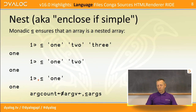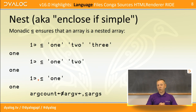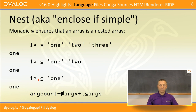Starting with an easy one: the monadic enclose underbar, or right shoe underbar, simply ensures that an array is nested — it encloses the array if simple. The primary motivation is that if you're writing a function that takes an array argument where there might be a varying number of parameters, strand notation collapses it to a simple array if there's only one item. This is a construct we found ourselves writing utility functions for in virtually every application, and therefore decided it deserved to be a primitive.